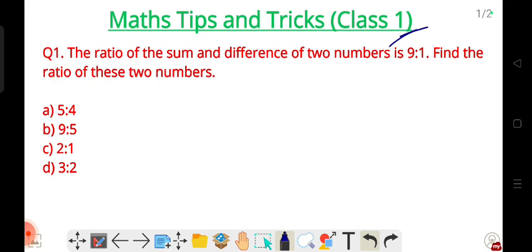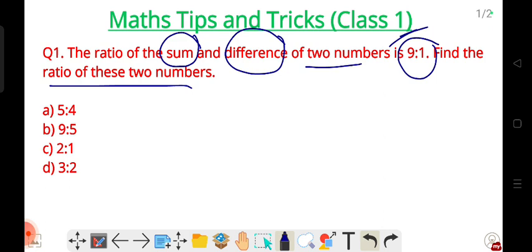If I give you the ratio of sum and difference, that is 9 is to 1, we need to find the ratio. So the conventional way, the trick is: 9 is to 1. Let A be 9, and B be 1.